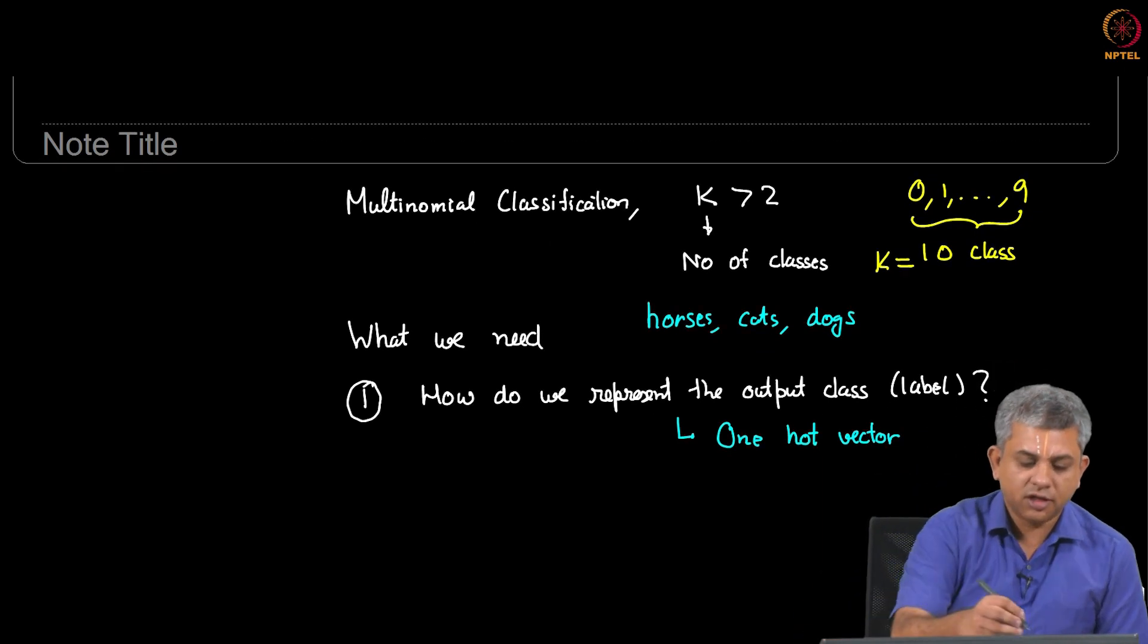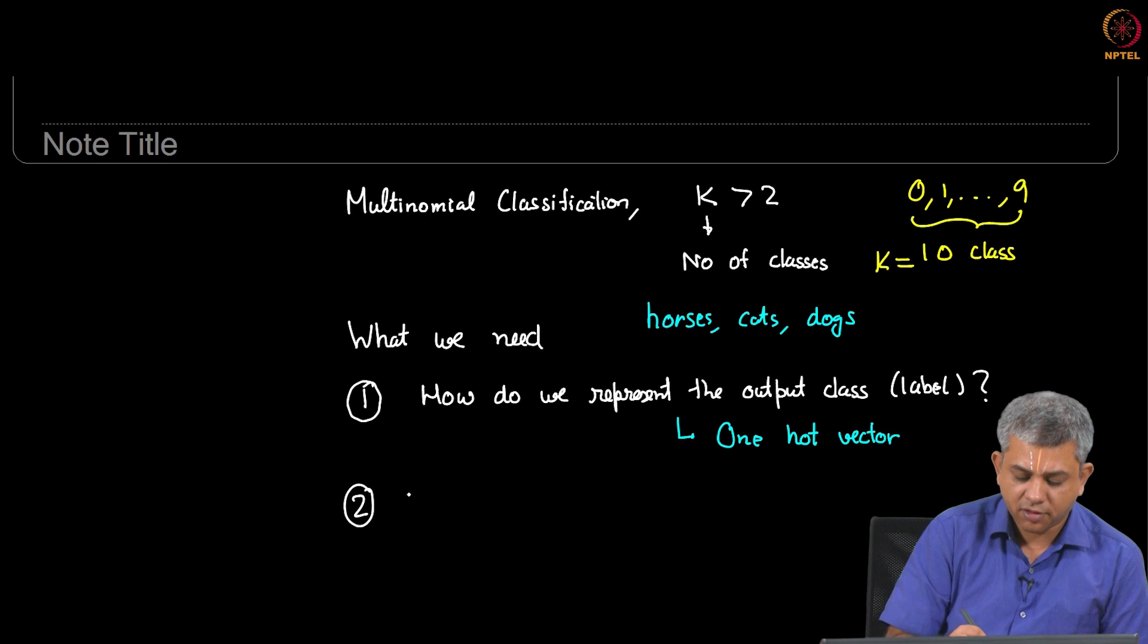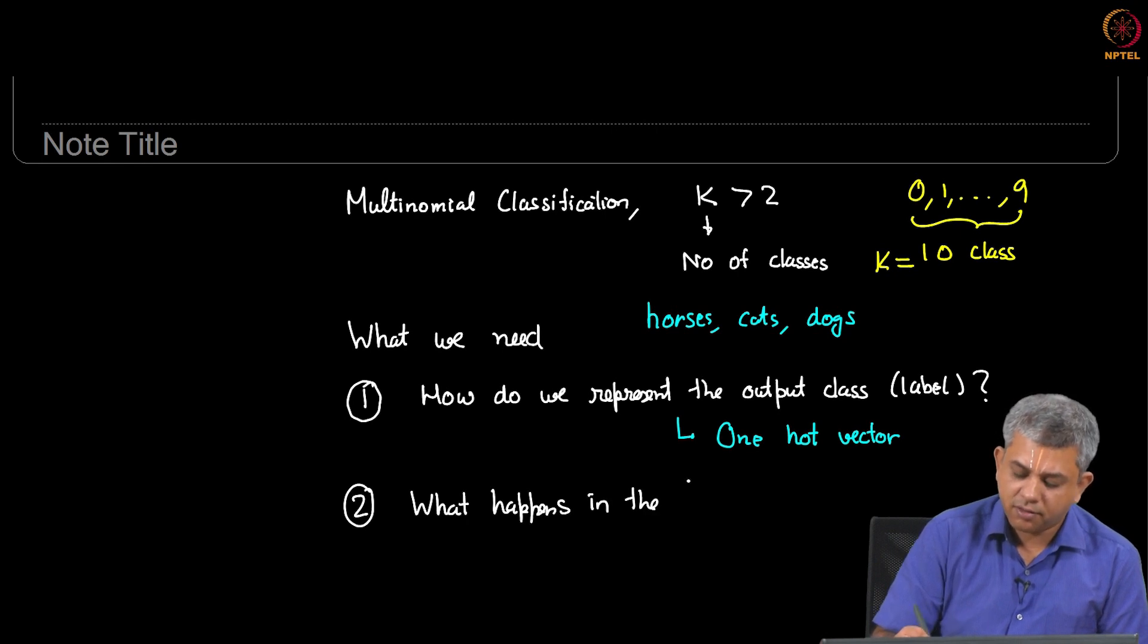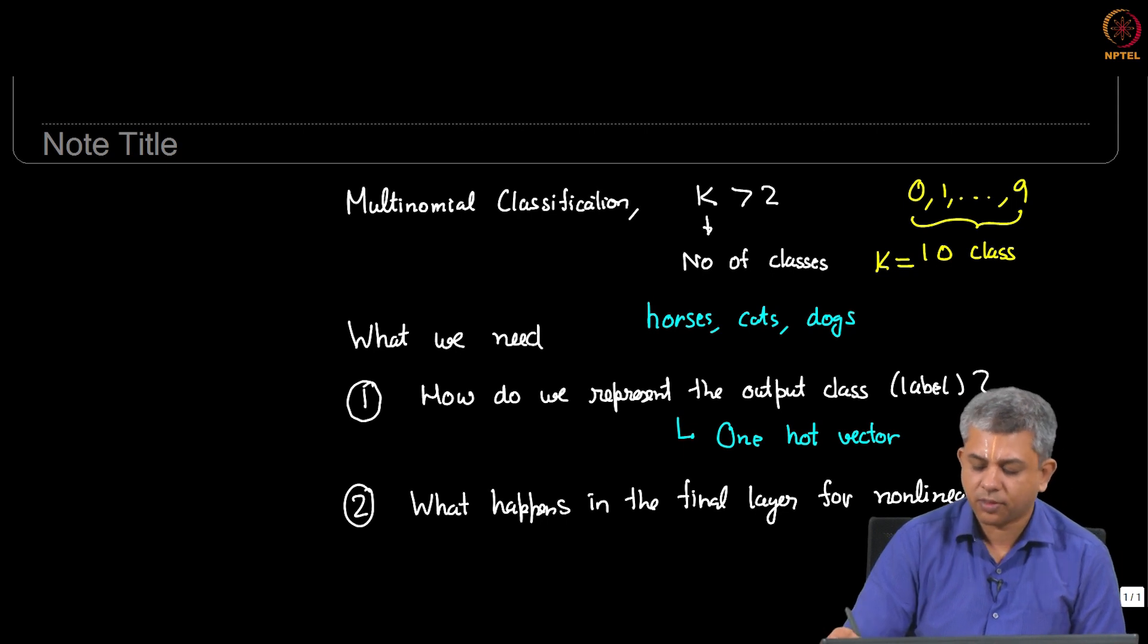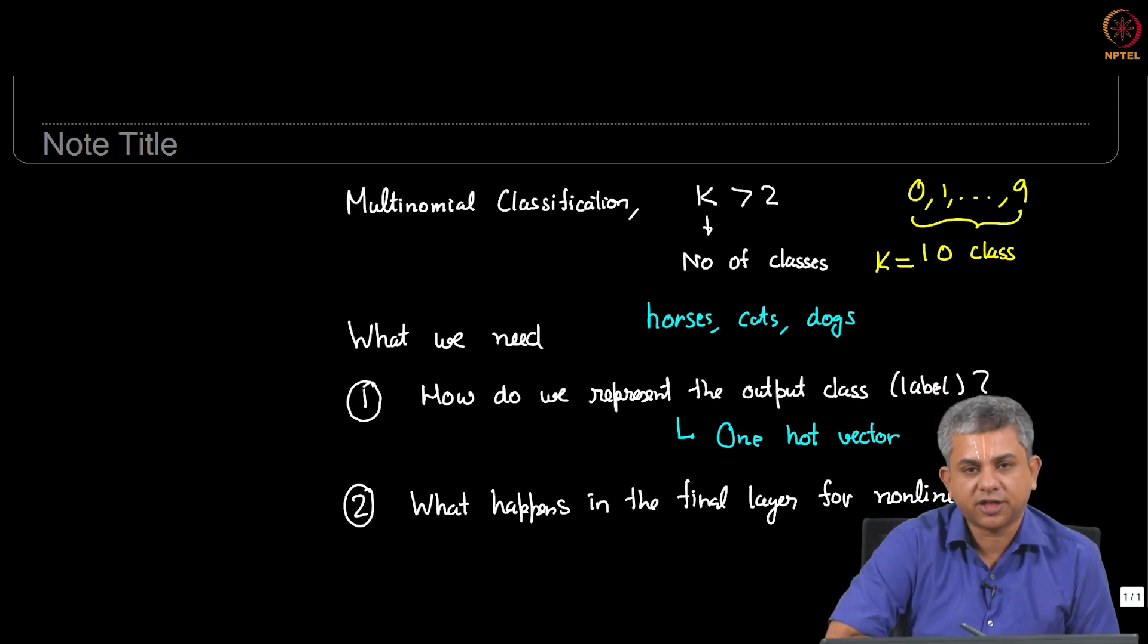We will be looking at this. The second problem is what happens in the final layer. So recall that in the binary classification task, we use the sigmoid because it neatly gave us a number between 0 and 1. And if it was close to 0, we knew it belonged to class 0. And if it was close to 1, we knew that it belonged to class 1. Now what do we do in a multinomial classification case?